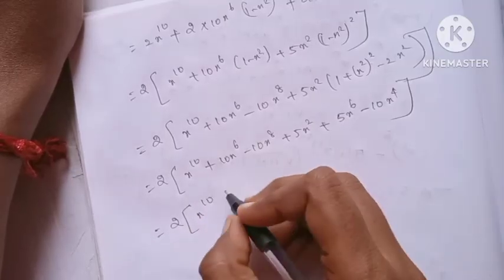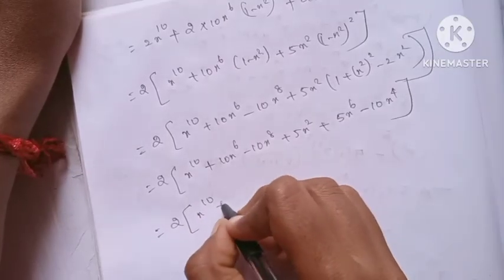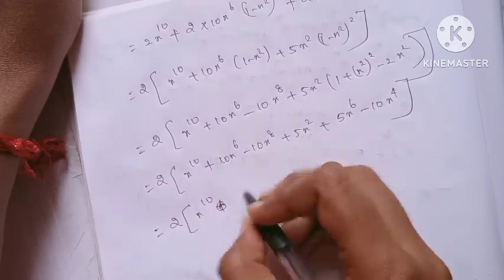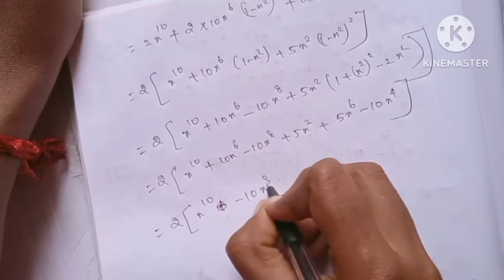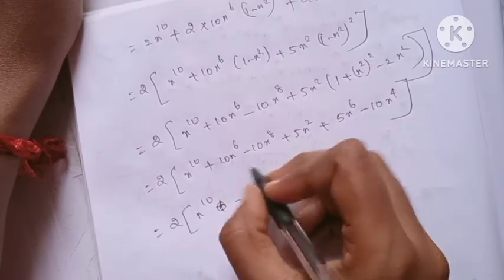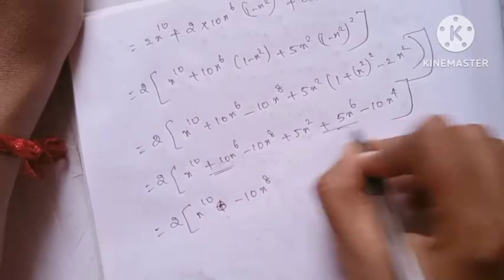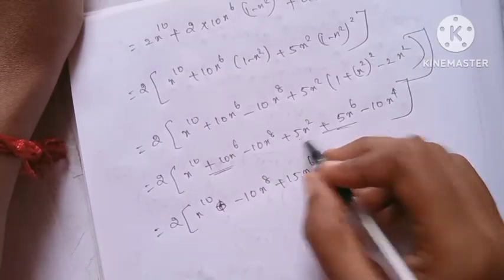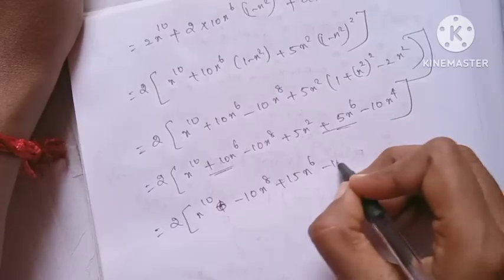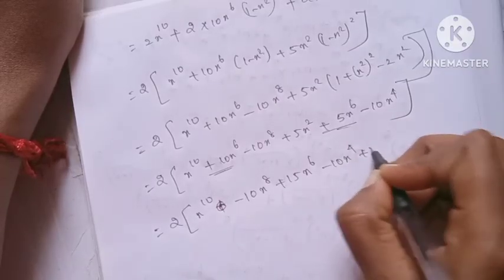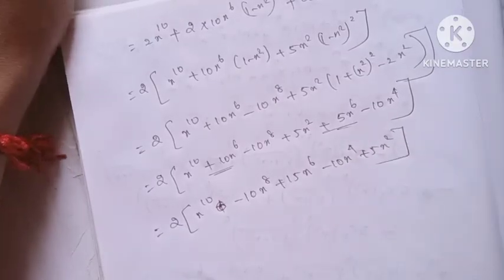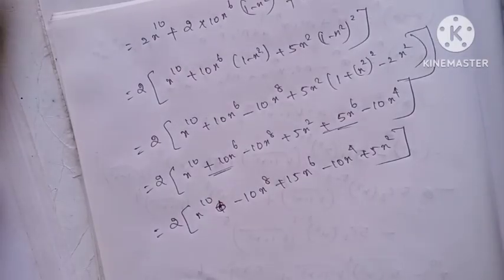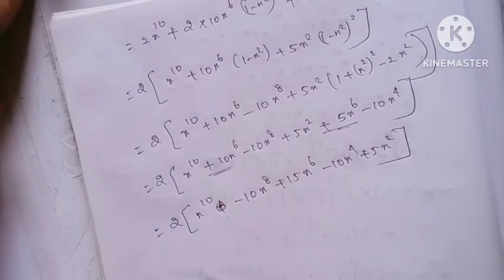So the final simplified result is: 2 x power 10 plus terms in x power 8, up to order 10 and 8 and 6: giving 2 x power 10 minus 10 x power 8 plus 15 x power 6 minus 10 x power 4 plus 5 x squared. Okay, so below in the question — thank you.